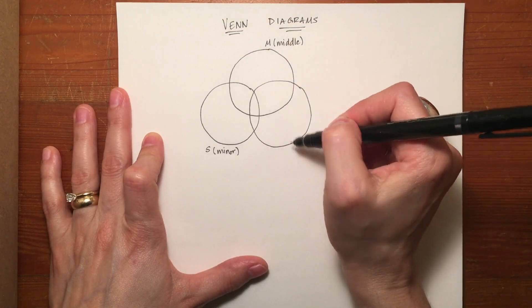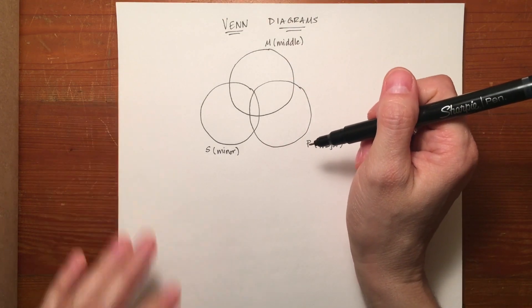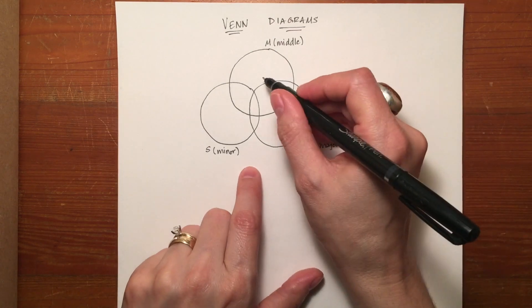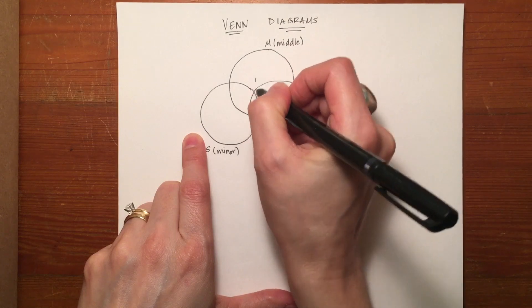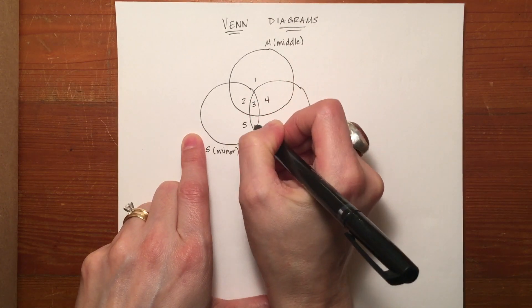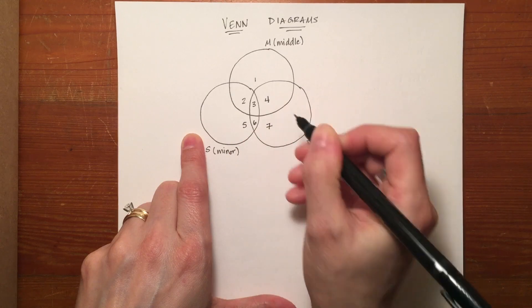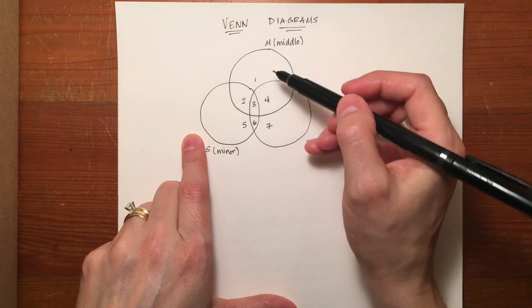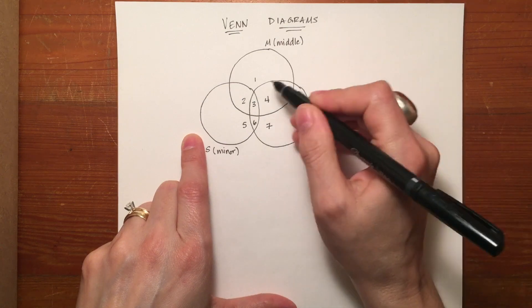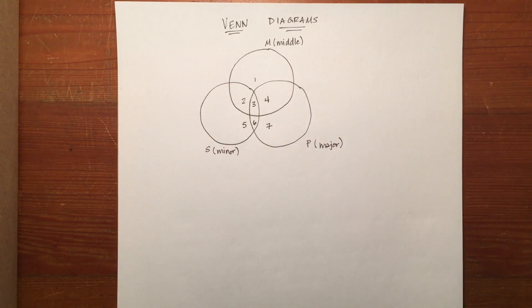In these three interlocking circles you can see on page 267 of your book that there are seven separate portions: 1, 2, 3, 4, 5, 6, and 7. Each one of these represents a different area that can be filled in using the premises.